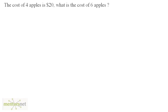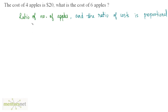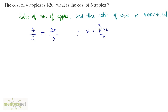Let us solve one more problem. The cost of 4 apples is $20 — what is the cost of 6 apples? There are only two things given: the number of apples and the cost. The ratio of the number of apples is proportionate to the ratio of costs. We have 4 by 6 as the ratio of apples, proportionate to 20 by x as the ratio of cost. Therefore x equals 20 times 6 by 4, which is 5 times 6 equals 30. So $30 is the cost of 6 apples.